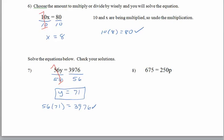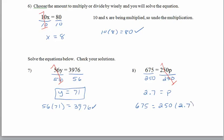In problem number 8, the variable is on the right-hand side, but this really doesn't change anything for us. 250 is being multiplied by p, so we'll undo the multiplication by dividing both sides by 250. 250 divided by 250 is 1, and we are left with p on the right-hand side. 675 divided by 250 is 2.7, or 2 and 7 tenths. Quick double check: does 675 equal 250 multiplied by 2.7? Yes, it does. So there's our answer.